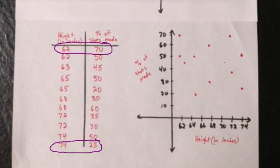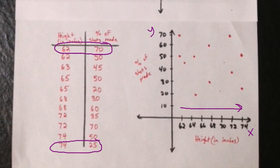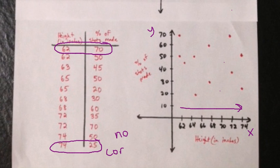Just like in our previous two examples, we are going to ask ourselves: what happens to our y values as our x values increase? Do we see a pattern here? As we're moving to the right on our x axis, as the height increases, what happens to the percentage of shots made? Well, unlike our previous two examples, there's no clear pattern here. We can't say for certain that the percentage of shots is either going up or going down. So when the coordinates don't form a clear pattern, there is no relationship — we describe that as no correlation, which just means no relationship between the two sets of data. That just means that the height of a person really has no impact on how good of a free throw shooter he or she is.